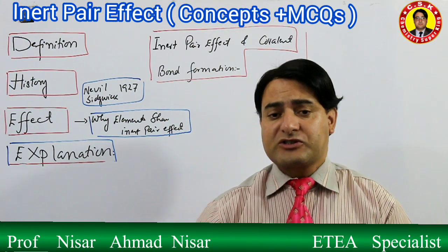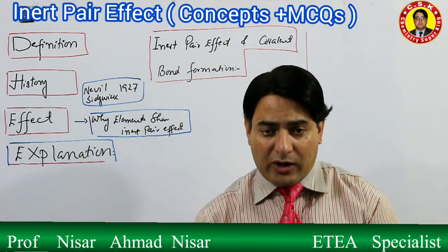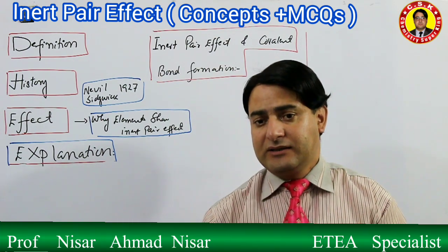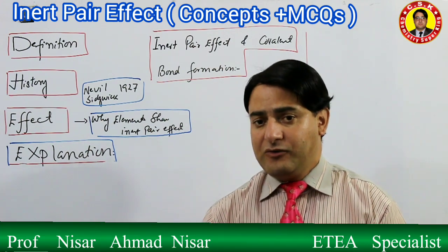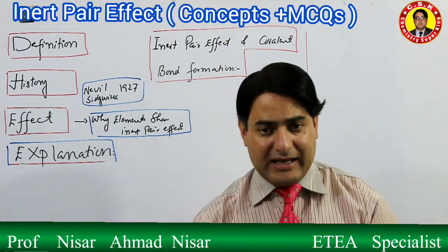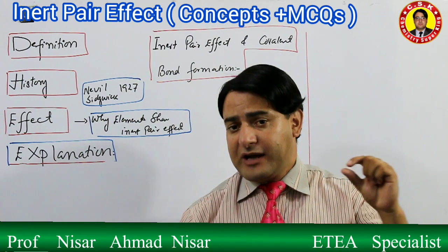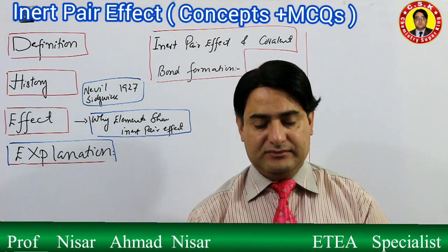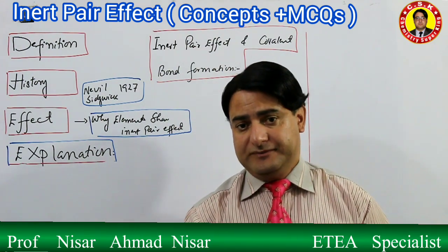This phenomenon occurs in the lower members of post-transition elements - that is, lower members of Group 3, Group 4, Group 5, and Group 6. This phenomenon occurs in the lower members of post-transition elements, from Group 3 to Group 6. Historically, the Inert Pair Effect was first described by Nevil Sidgwick in 1927.